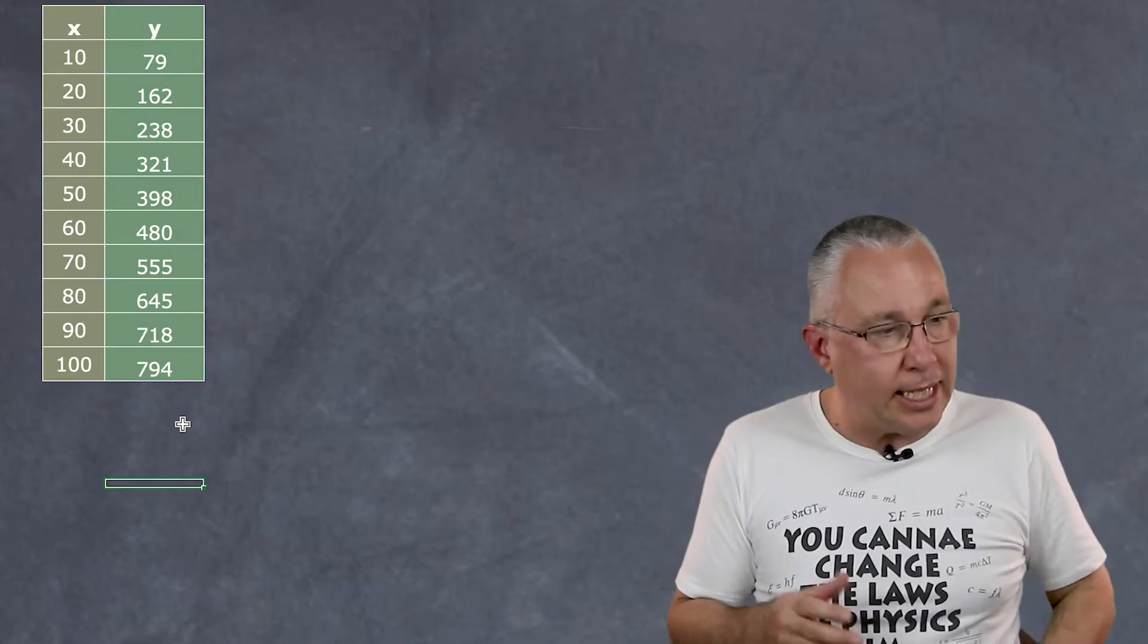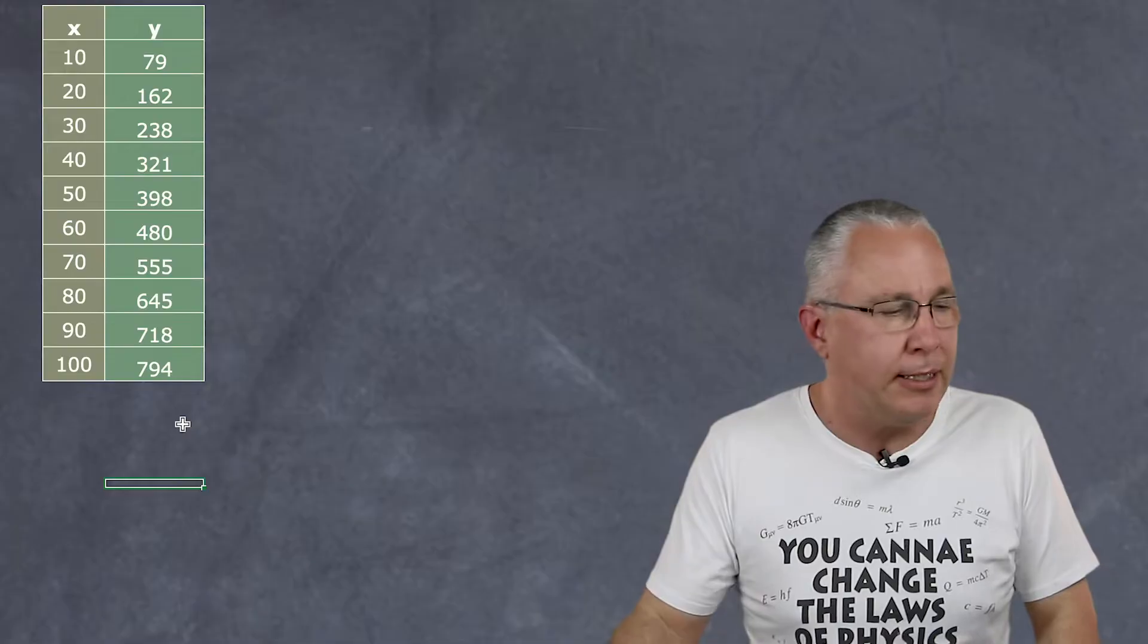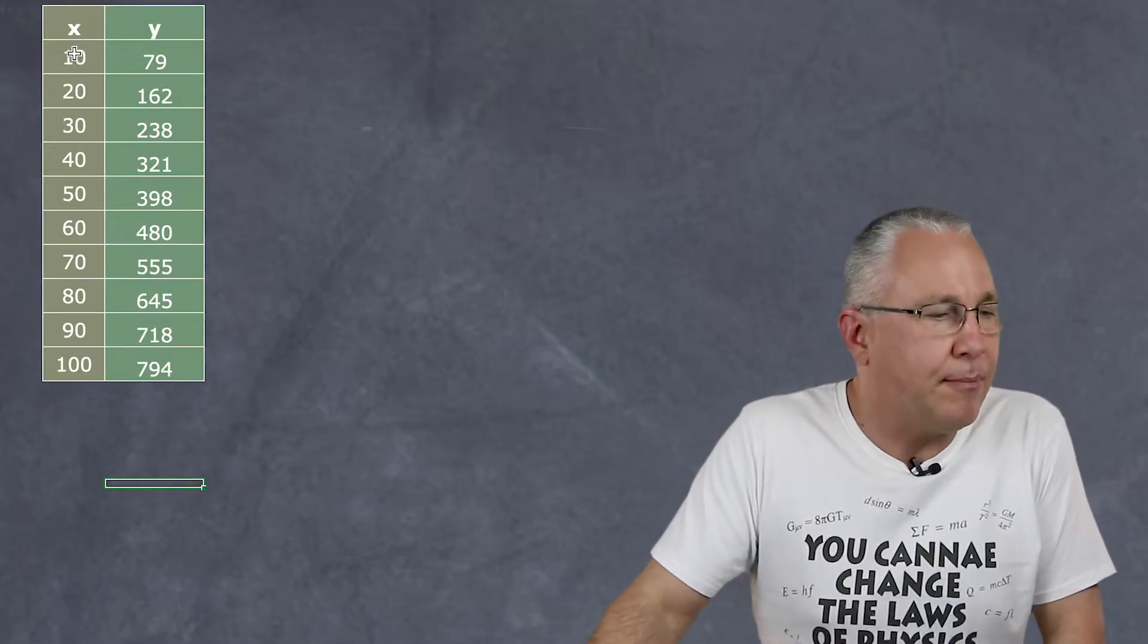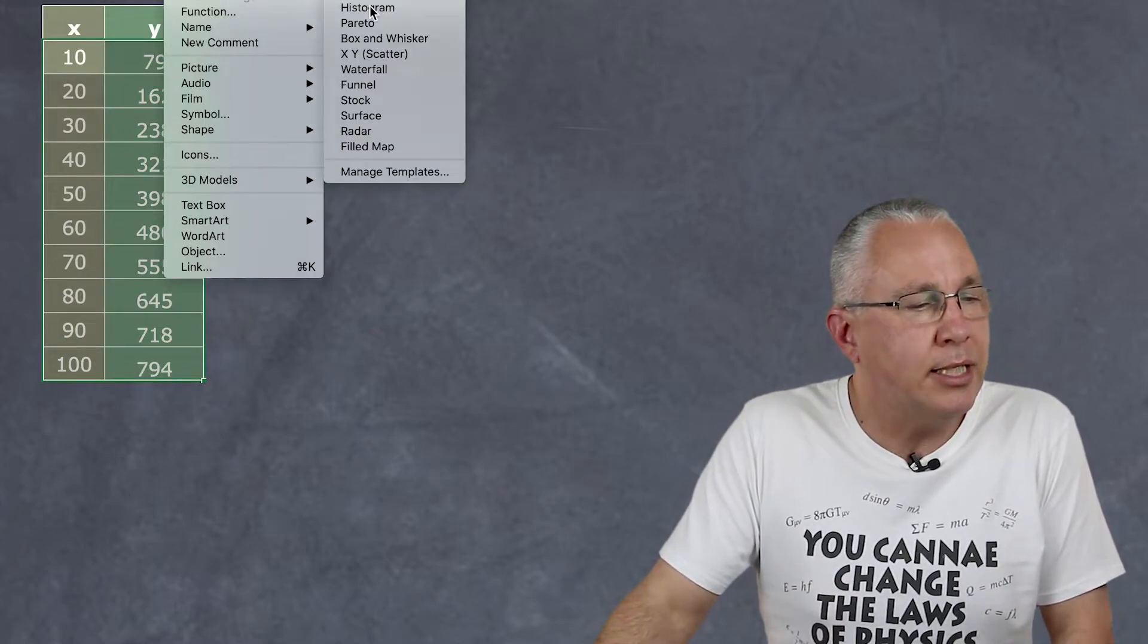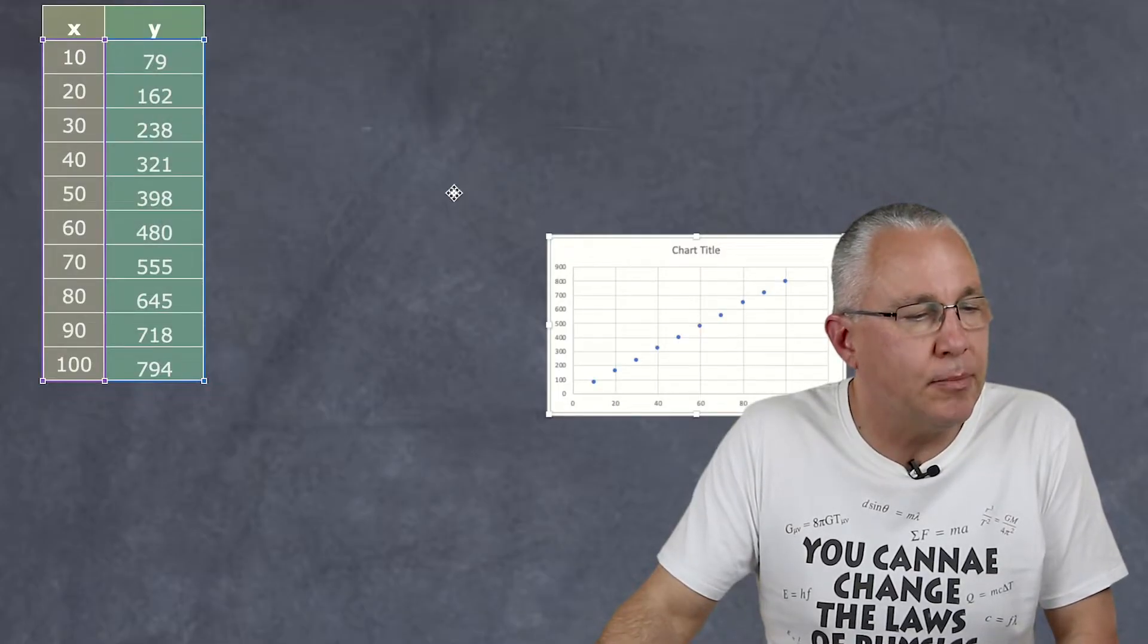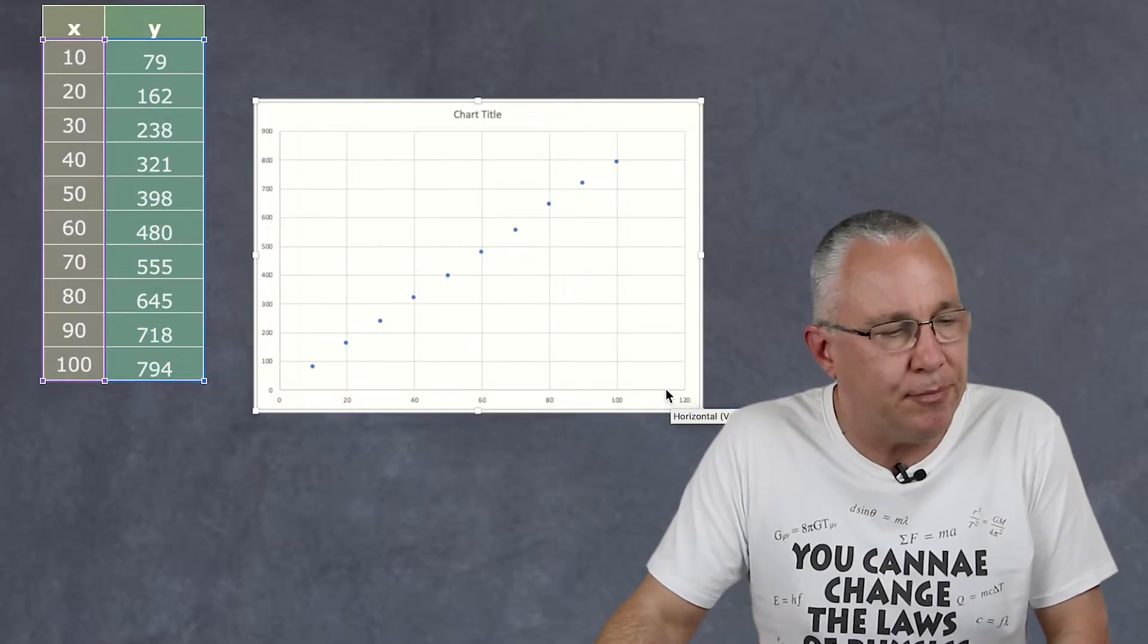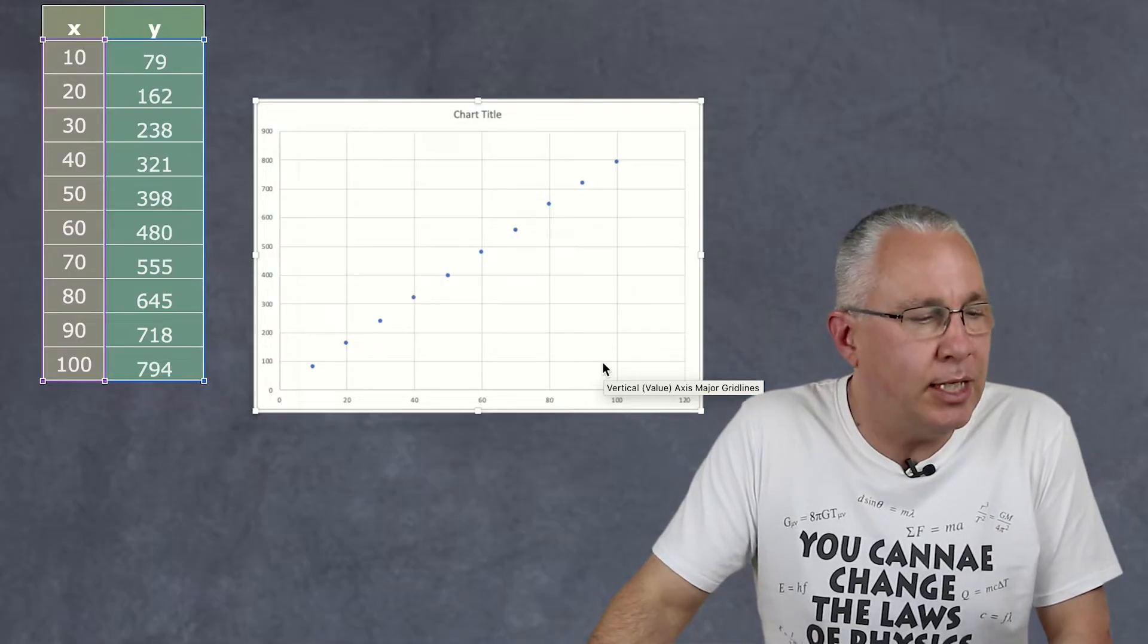So here I have X and Y. They're my two variables. X is my independent, Y is my dependent. And in this case I'm going to be graphing one against the other. Now I choose the columns and in this case I'm going to insert a chart and I'm going to use an XY chart. And here is my graph and you see there is a lovely line. Now in this case what we say is there is a linear relationship.